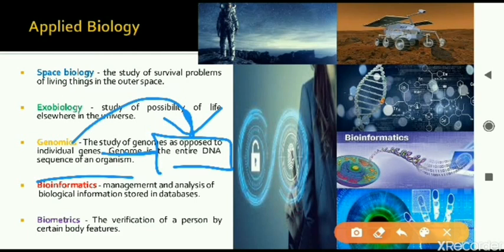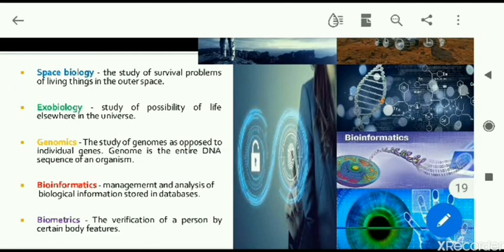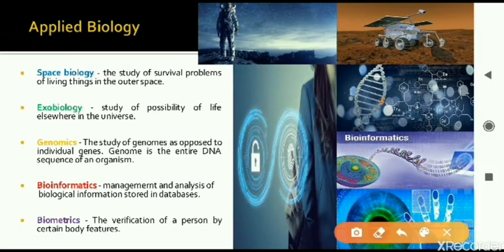What is bioinformatics? It is the combination of biology as well as computer science and information technology — both things are used together. We are managing and analyzing biological information. Whatever biological information we have, we convert it and store it in computers, and analyze it using computers. That is done in the subject of bioinformatics.